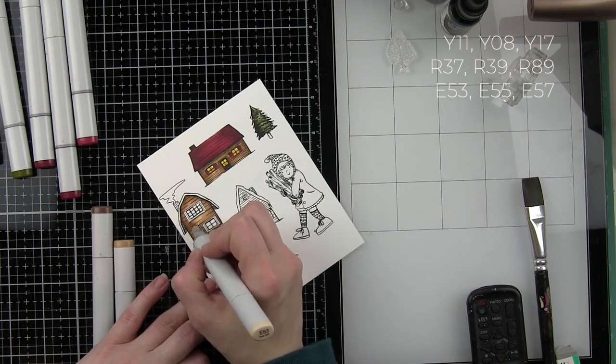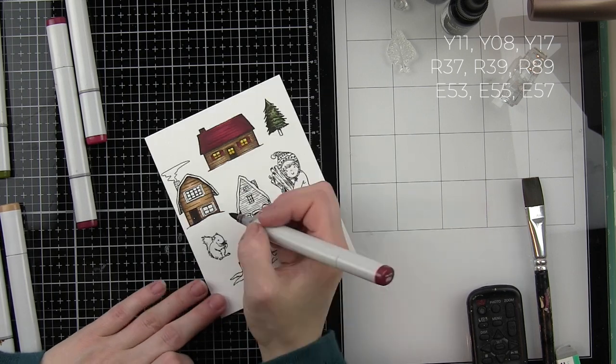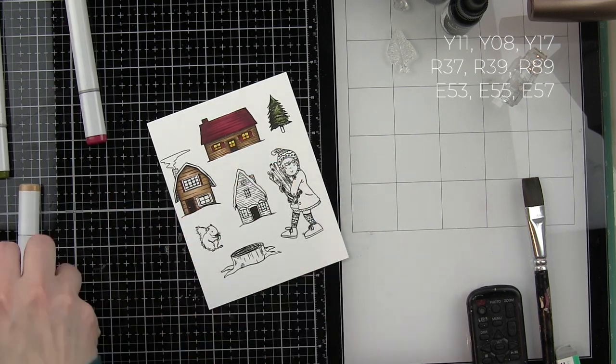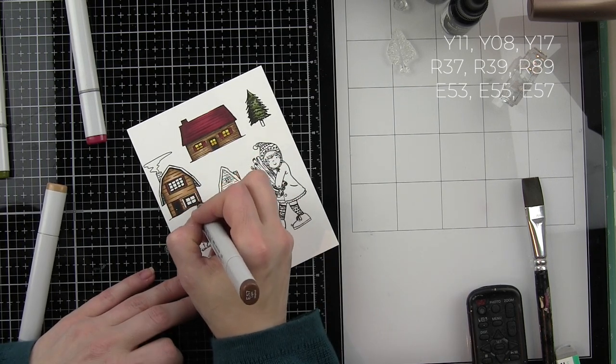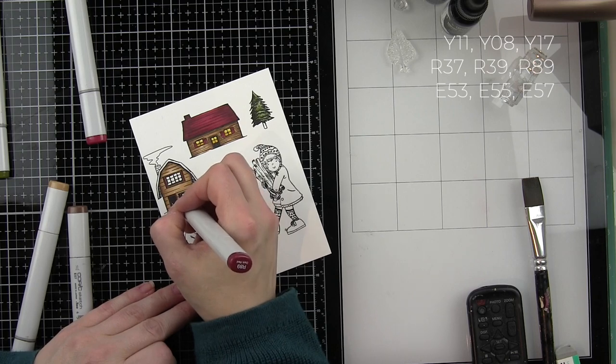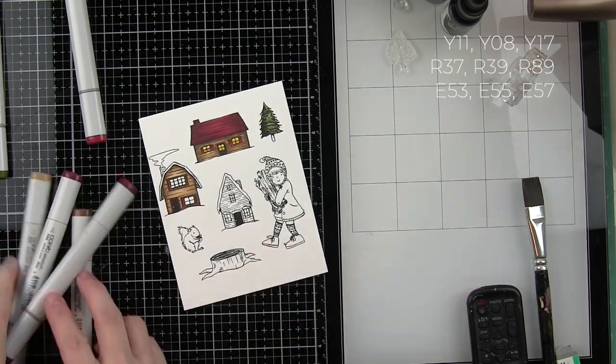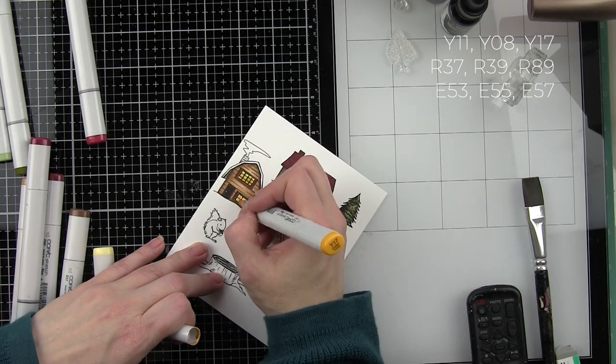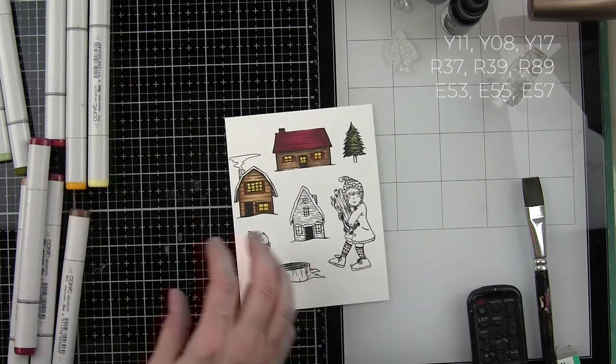I like to lay down my dark color first, go around some of the edges with my dark color, and then blend out with my midtone and go back and blend even further with my lightest marker again. This is E53, 55, and 57. I use this color combination throughout the design not only for the buildings but for the hair on the girl and the stack of firewood that she's carrying in her arms and the tree stump.